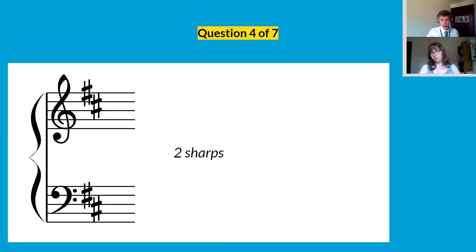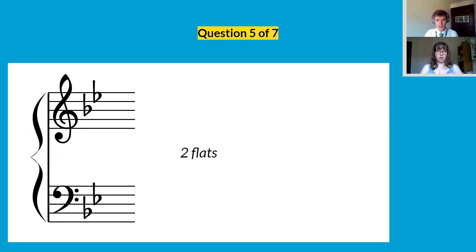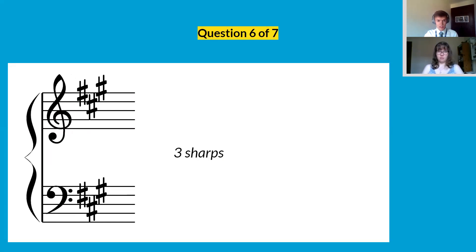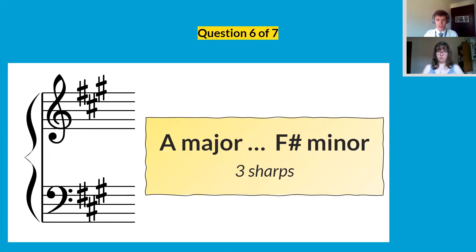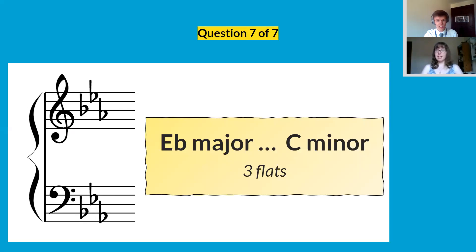Question number four, two sharps, D major and B minor. Both have a key signature of two sharps. Question five, two flats, B flat major and G minor. Question number six, three sharps, A major and F sharp minor. That's a good key. And question seven, three flats, we have E flat major and C minor, which we had at the end of the quiz last week. So that was the first round.